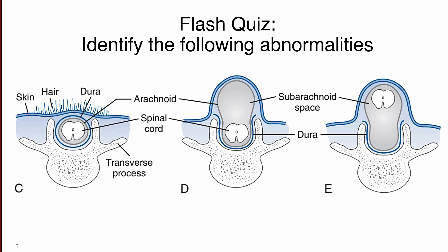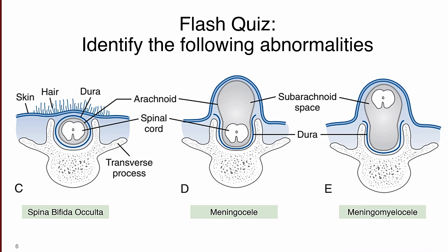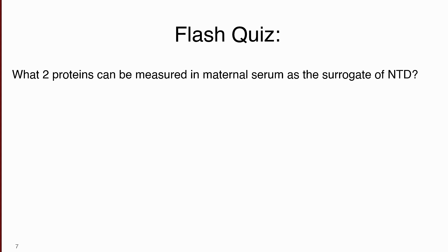Alright, so for the flash quiz — let's identify the following abnormalities. You can pause the video and answer yourself. The first one is spina bifida occulta, the second one is meningocele, and the third is meningomyelocele, as seen from their characteristic features. The presence of a tuft of hair with intact dura mater indicates spina bifida occulta; cystic dilation with herniation of the meningeal layer indicates meningocele; and cystic dilation with herniation of both meninges and neural tissue indicates meningomyelocele. The next flash quiz: what two proteins can be measured in maternal serum as surrogates for neural tube defect? The answer: elevated alpha-fetoprotein and acetylcholinesterase.